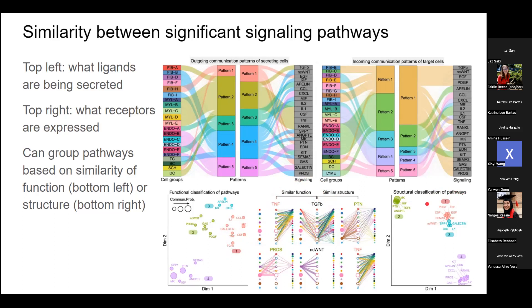For functional classification, TNF and TGF-beta are grouped together because myeloid A has many of the same connections to many of the same cell types. For structural classification, TNF and CWNT are grouped because the shape of their networks is generally similar. The functional classification is not from the literature — it comes from the analysis itself, based on which cell types are using pathways to talk to the same other cell types.